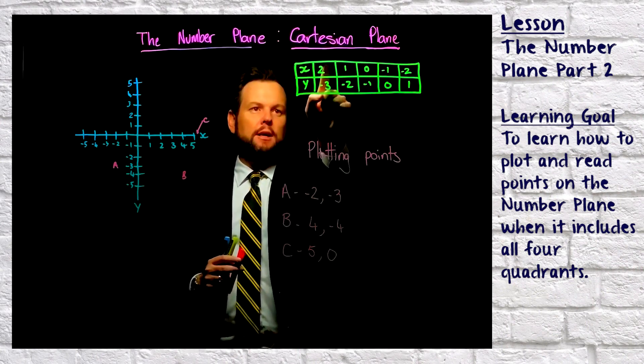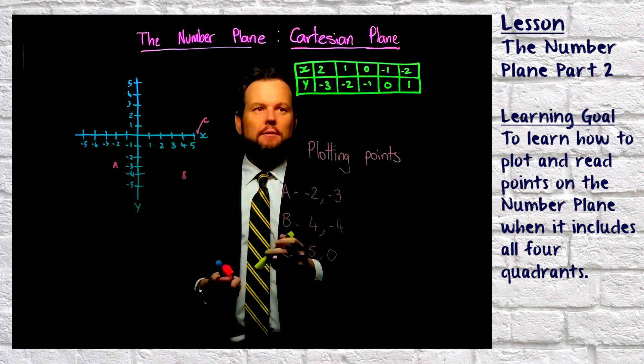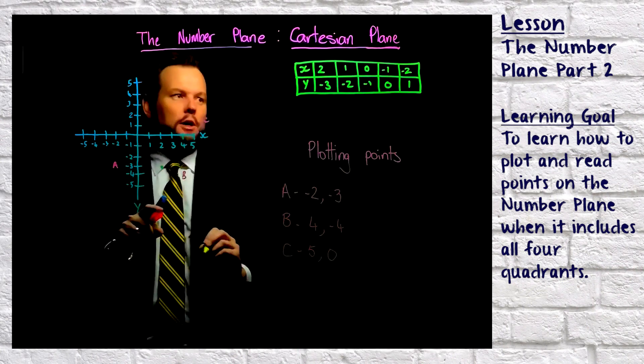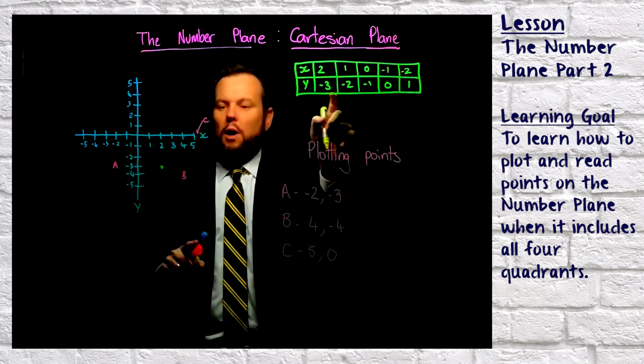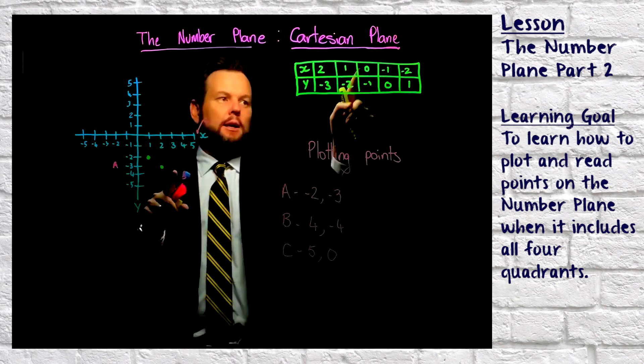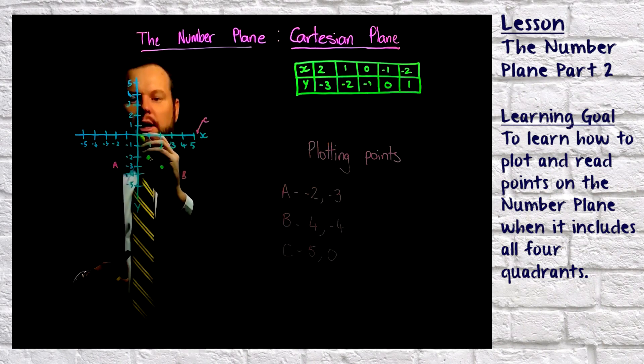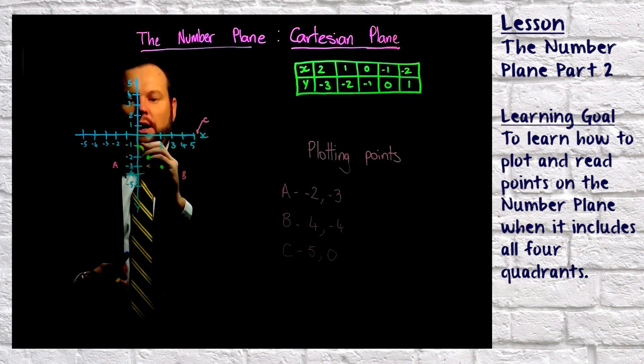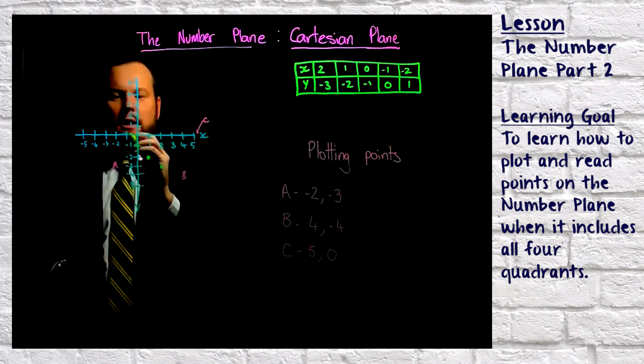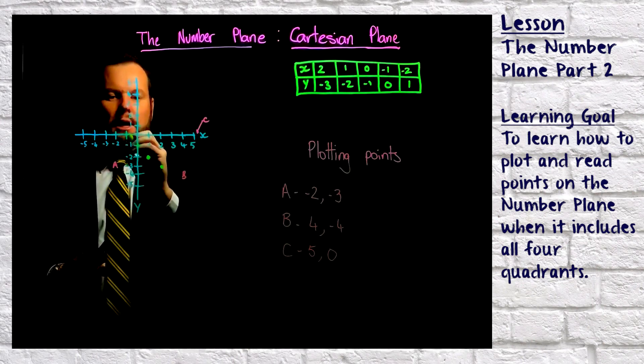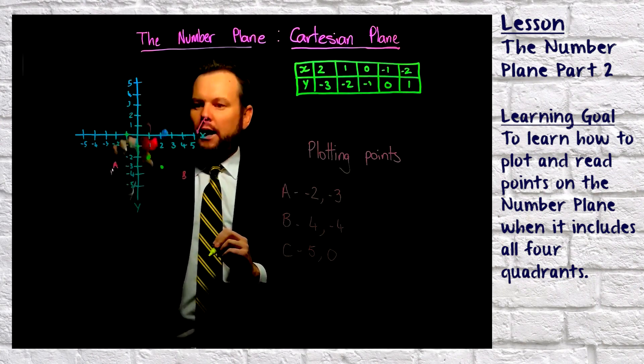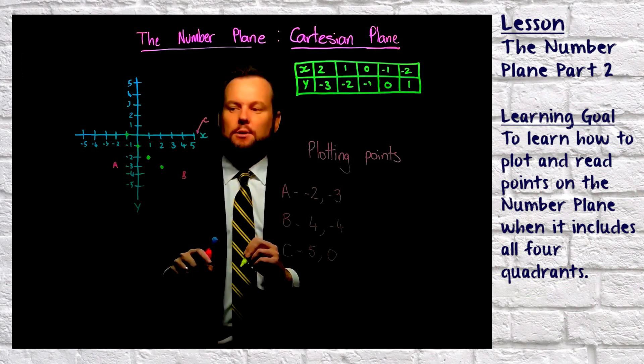So our first point here, we're starting at two and negative three. So two, negative three, and I'm just going to put in a dot. Next one, one and negative two. Okay, one and negative two. Next one, zero and negative one. So zero and negative one, that's where it goes. Time to make a mess of my table. Negative one and zero. So negative one and zero on the y-axis. Obviously the y-axis, that's where the origin is. So that's where we are.